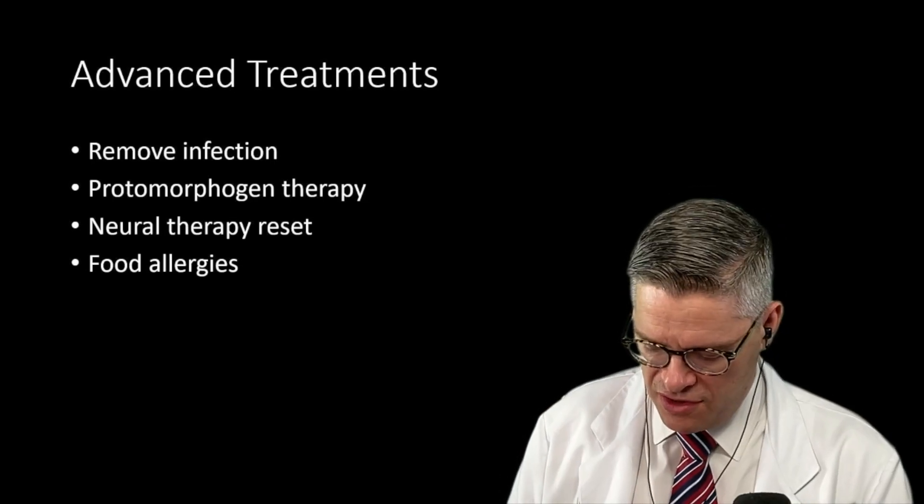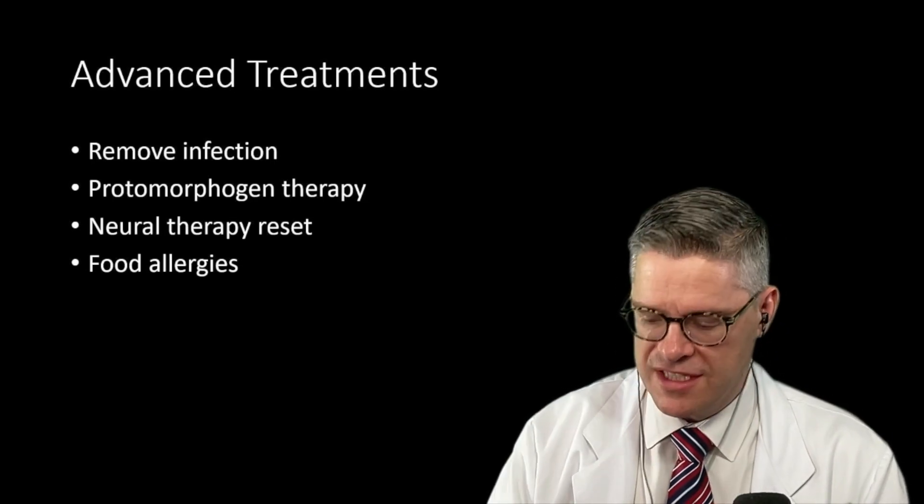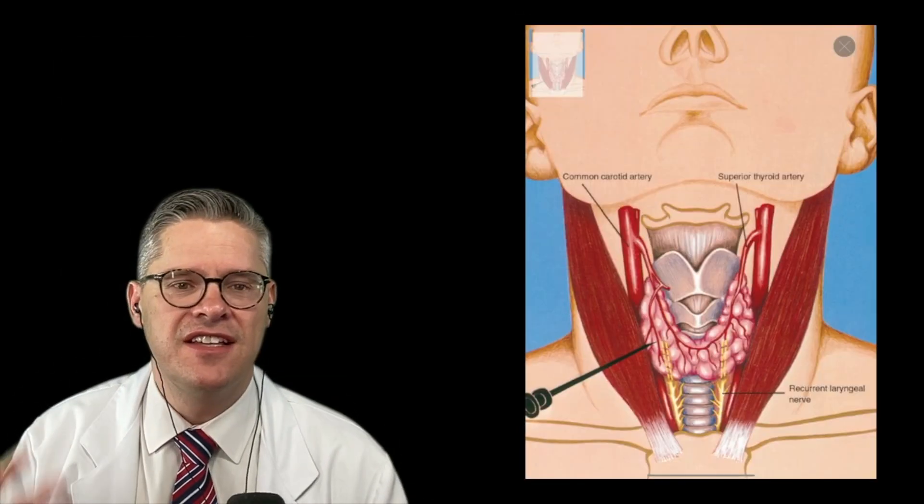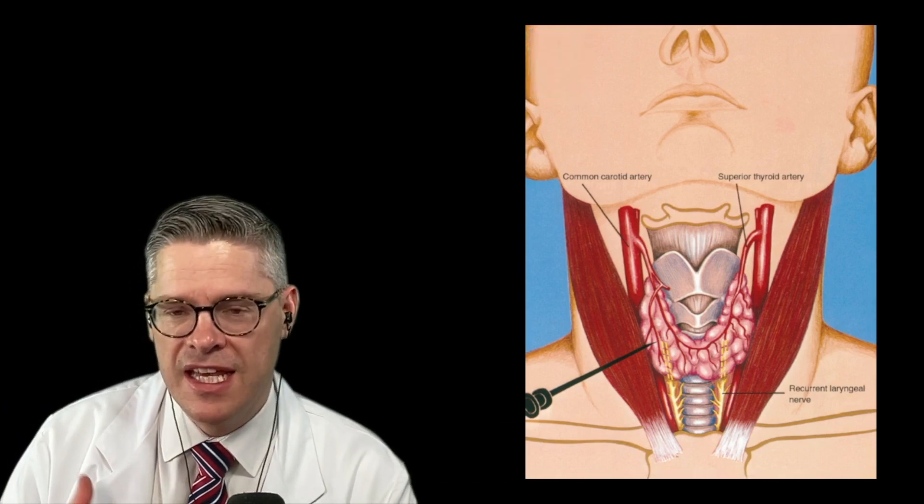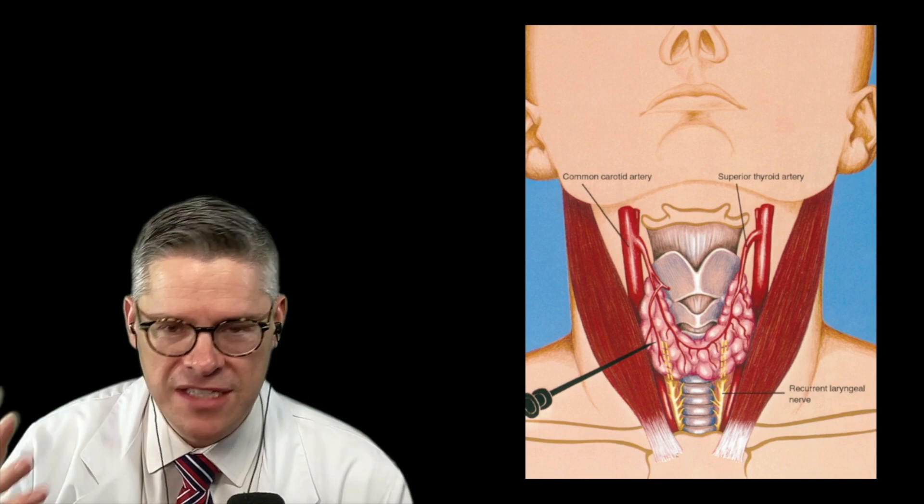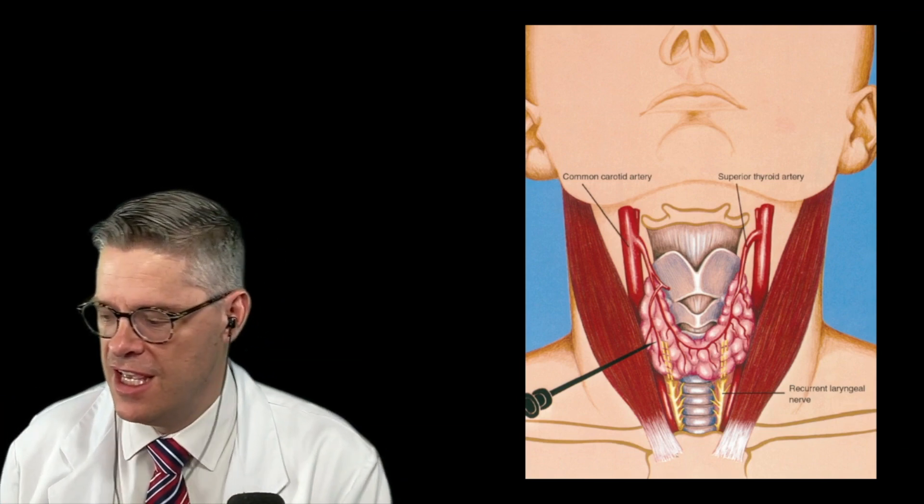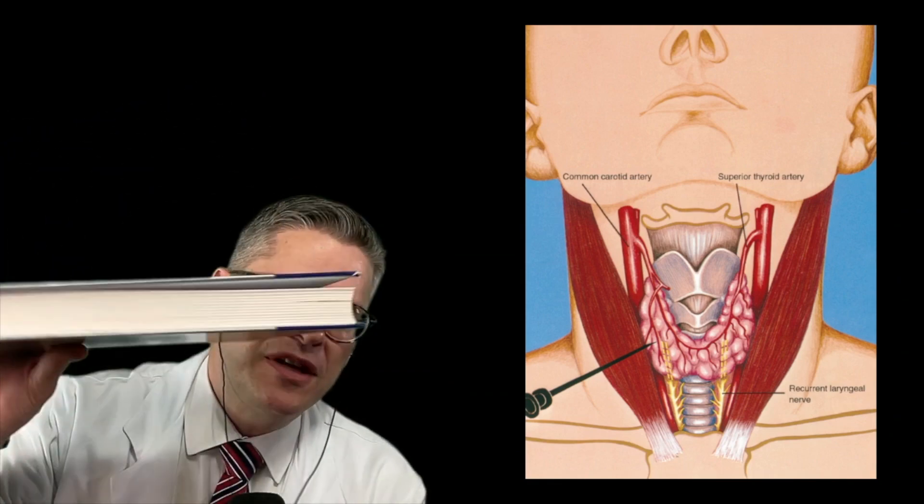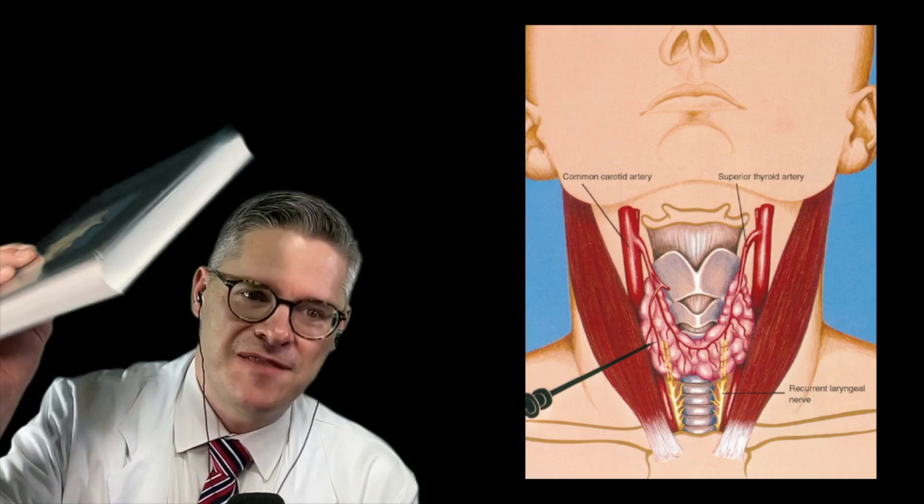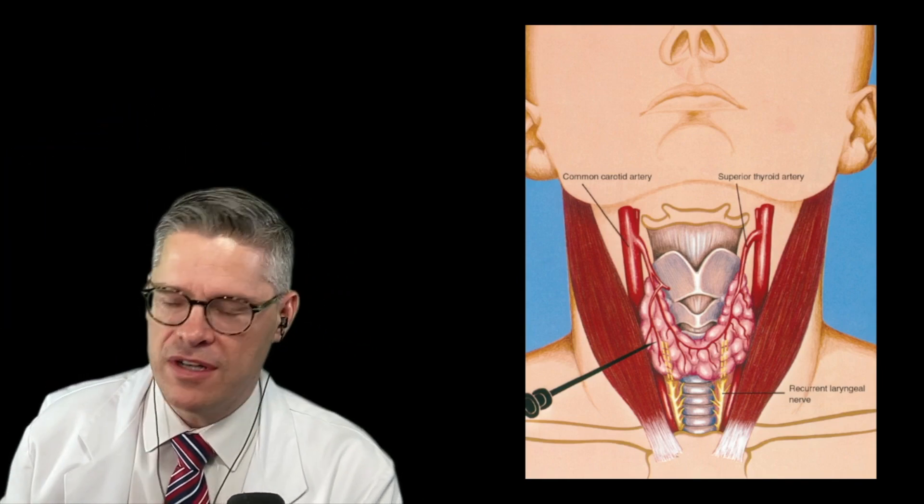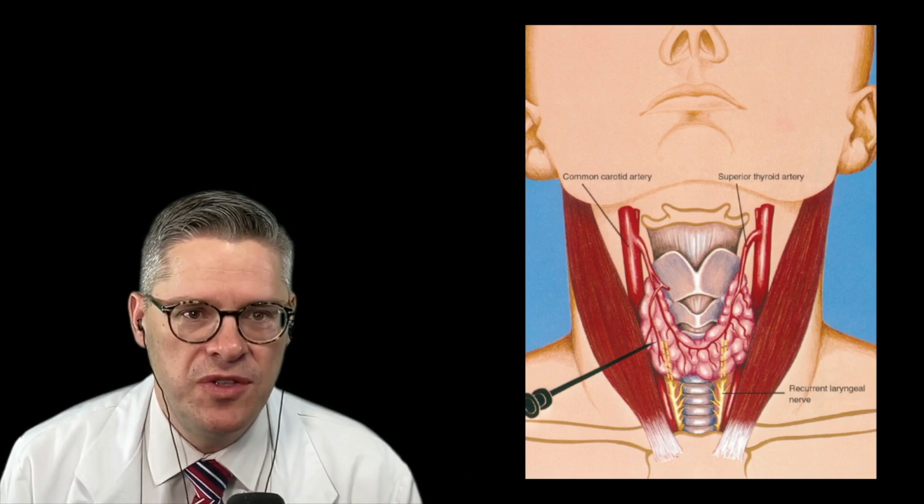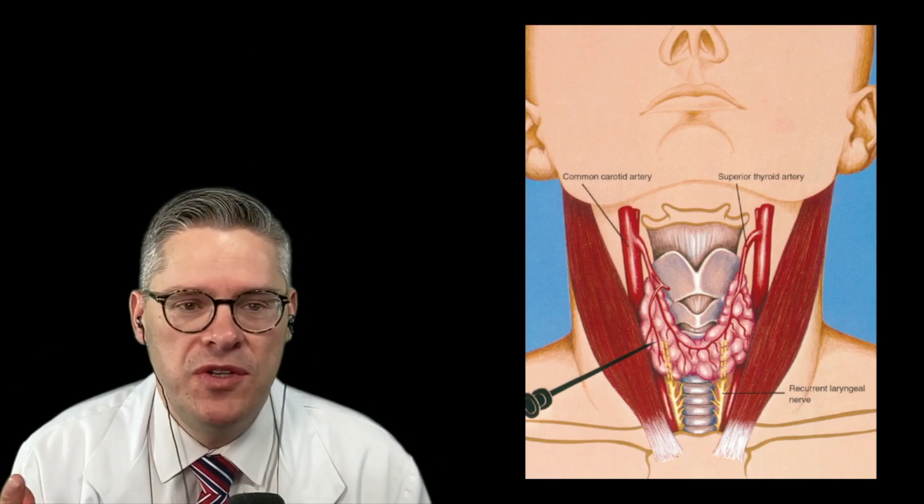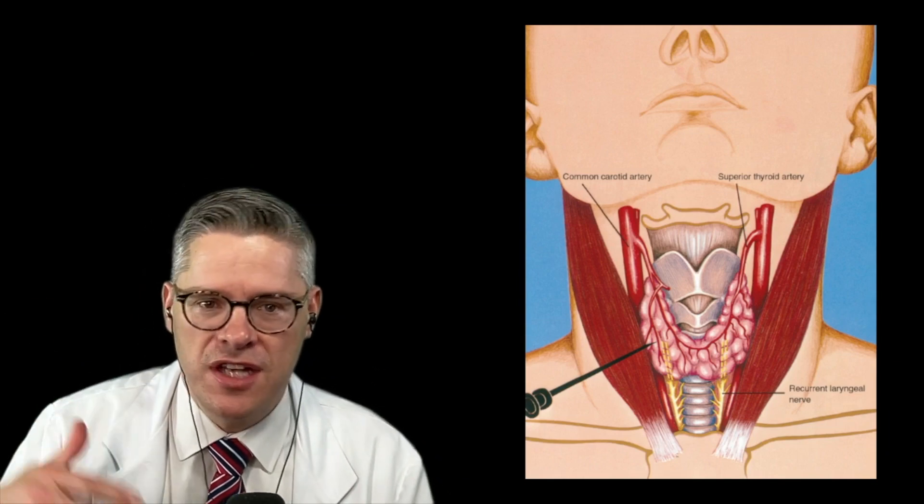An advanced treatment called neural therapy, where we can actually get it to reset. I'm going to show you right out of my book what this looks like. This is taking a specific type of B vitamin that helps the nerves to open, close, and reset—basically reset the nervous system control to the thyroid. It's outlined in this textbook called the Manual of Neural Therapy. This book explains why it's so important to literally get the thyroid to reboot.